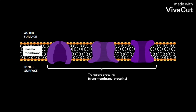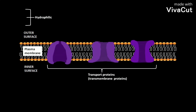All transport proteins are transmembrane proteins. They contain many membrane-spanning segments that are alpha helices. Transport proteins allow movement of hydrophilic solutes like SA and SB without their coming into contact with the hydrophobic plasma membrane.